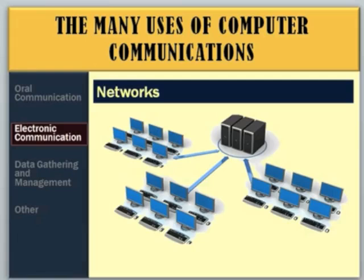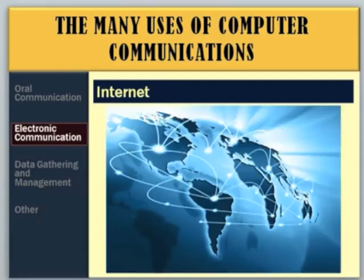Electronic communication is another part and use of computer communications. Because of networks, many computers are now able to communicate with each other. Because of the physical connection, it allows us to use the Internet — it actually forms the Internet. The physical connection between computers through networks is called the Internet. Communication becomes so much easier.